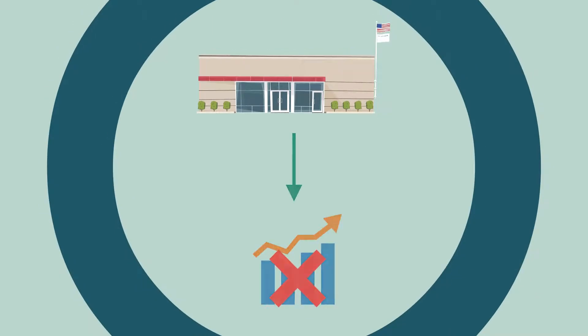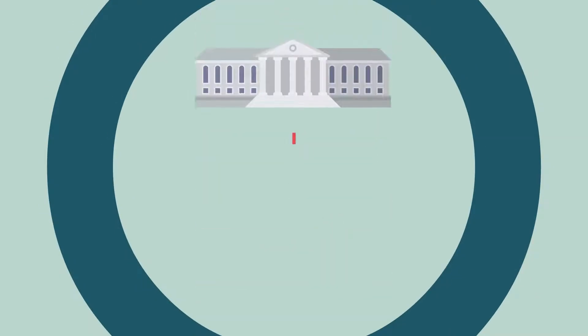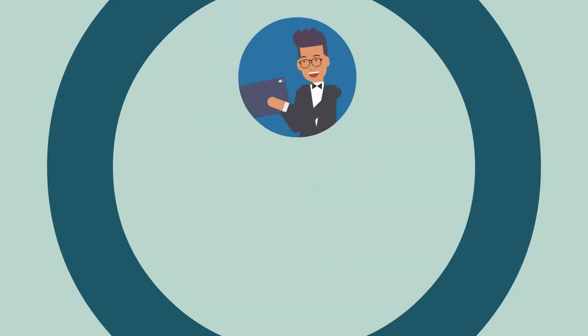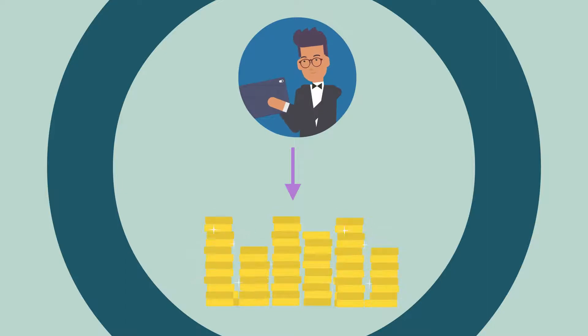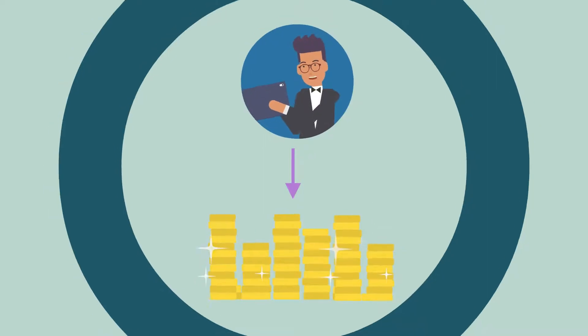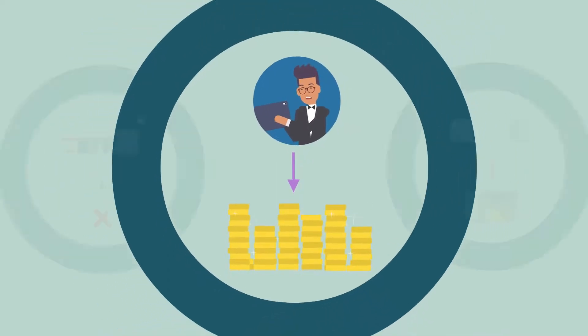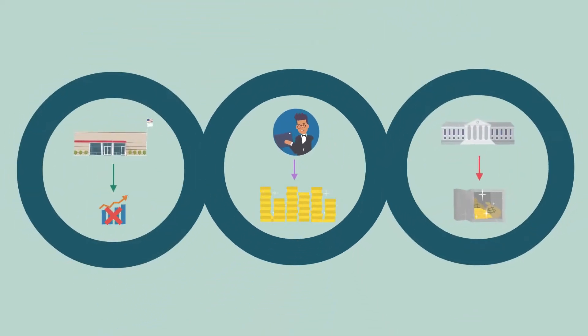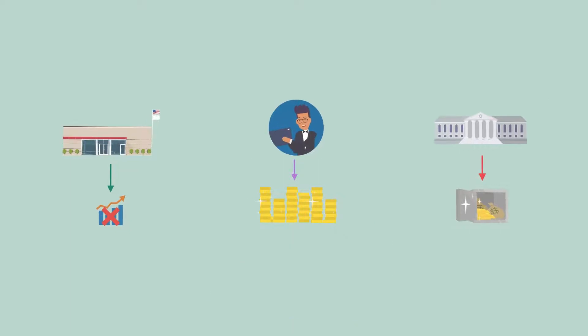Traditionally, we put our trust in the government to control inflation, in the bank to safely store our money, and in a financial advisor to help us get more profit. However, this trust isn't always rewarded due to the risks taken by these central authorities.